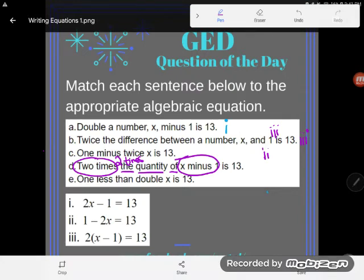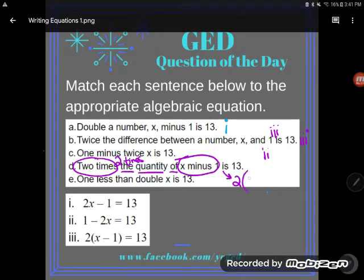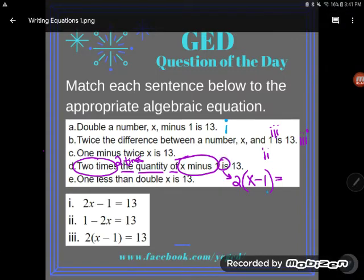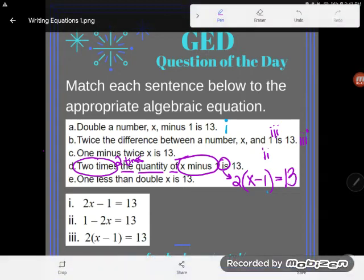Again, that language, the quantity of, signals to me that I'm talking a grouping. So if you want to do that, two times the quantity of x minus one, just like with the difference, you had better start a grouping. So there is two times the quantity of x minus one. And that, of course, it says is, is 13. And so even though D was phrased a little differently, it also matches with three.